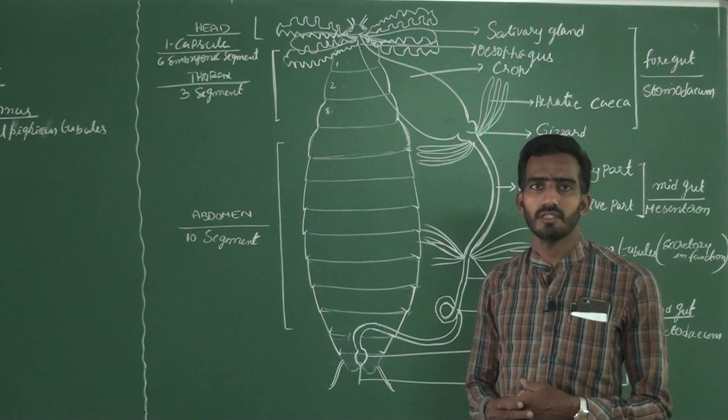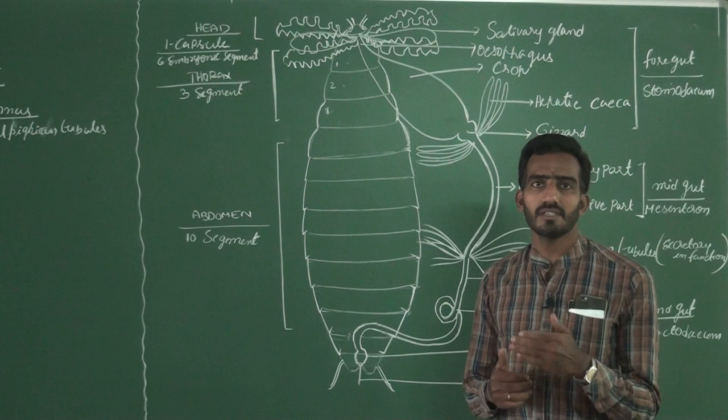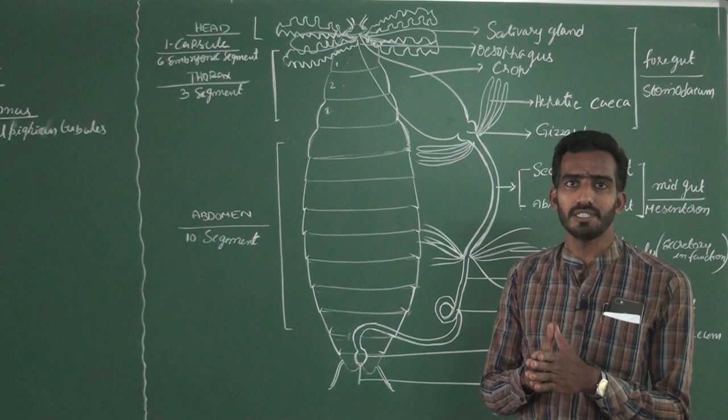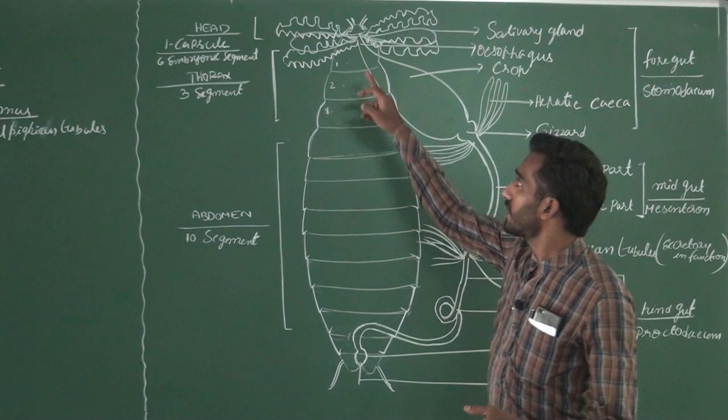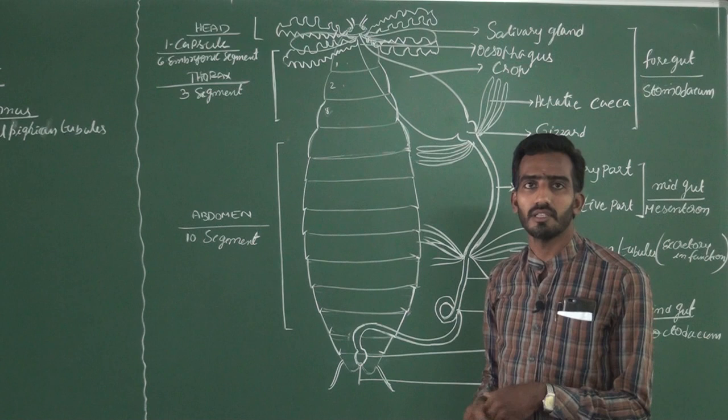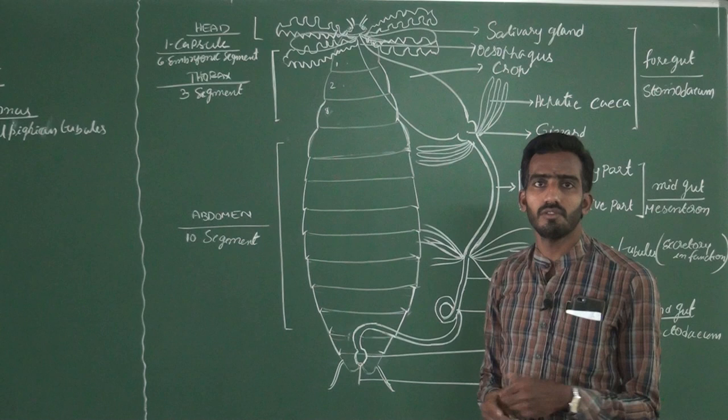This video is a continuation of previous videos. In previous videos, we discussed the type study of cockroach. Two introduction parts are already completed. In the introduction part, we discussed morphology and classification of cockroach — the head part, thoracic part, and abdominal part. This video is regarding the alimentary canal, which is the digestive system of cockroach. Let me start today's video session.